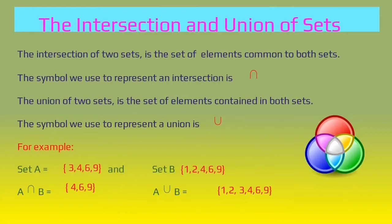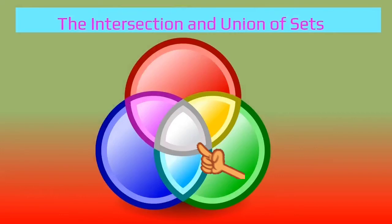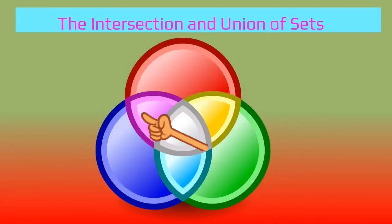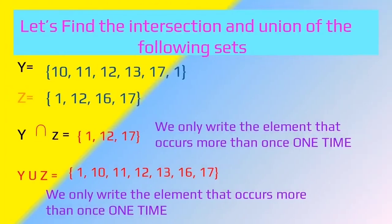Now we're going to look at the intersection and the union of sets. Remember earlier we looked at set symbols — pause and go through this in detail. The intersection is that area which overlaps. The union is everything shared between or among those sets. Let's find the intersection and the union of the following.